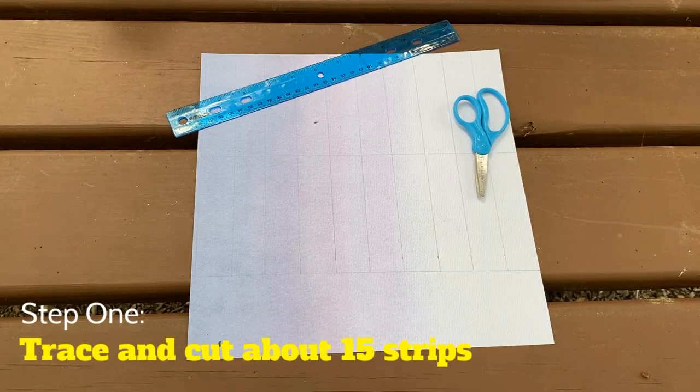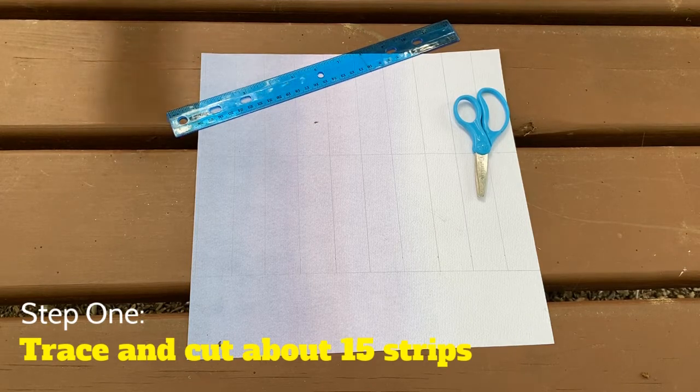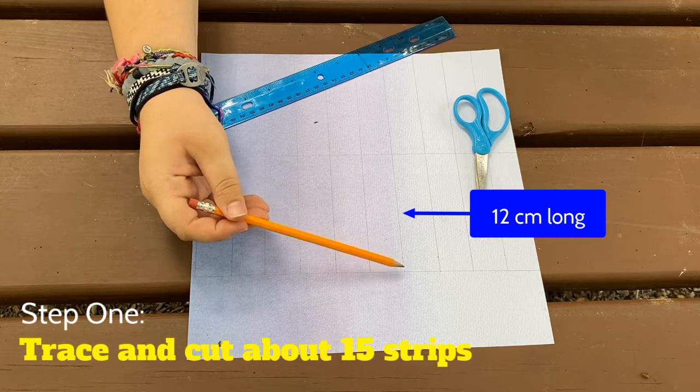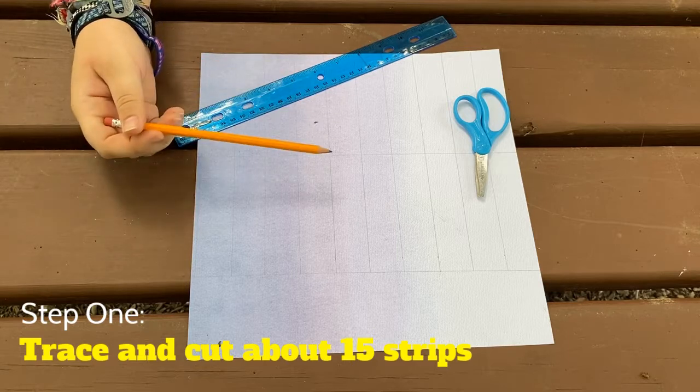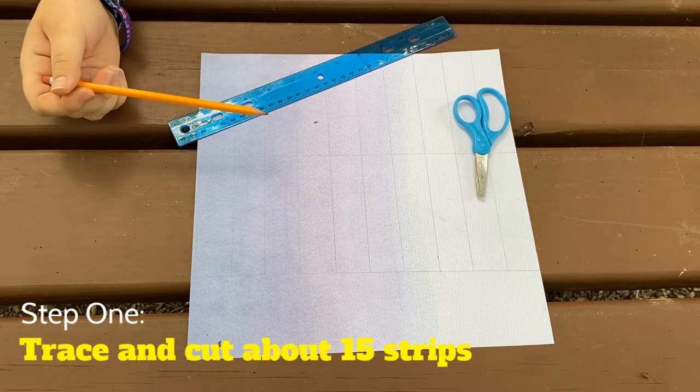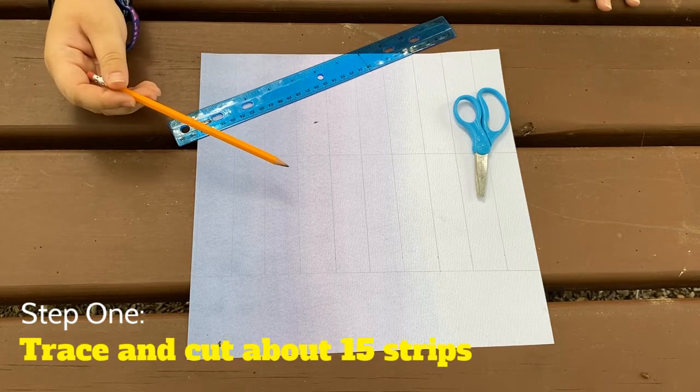The first step in making your very own paper friendship bracelet is to cut your paper into strips. The dimensions we used were 12 centimeters across by 3 centimeters down. To make sure the strips are even, we use the pencil and ruler to trace the lines, and then we just cut across the lines. The amount of paper strips you need depends on how big you want your bracelet. For our bracelet, we used around 15.